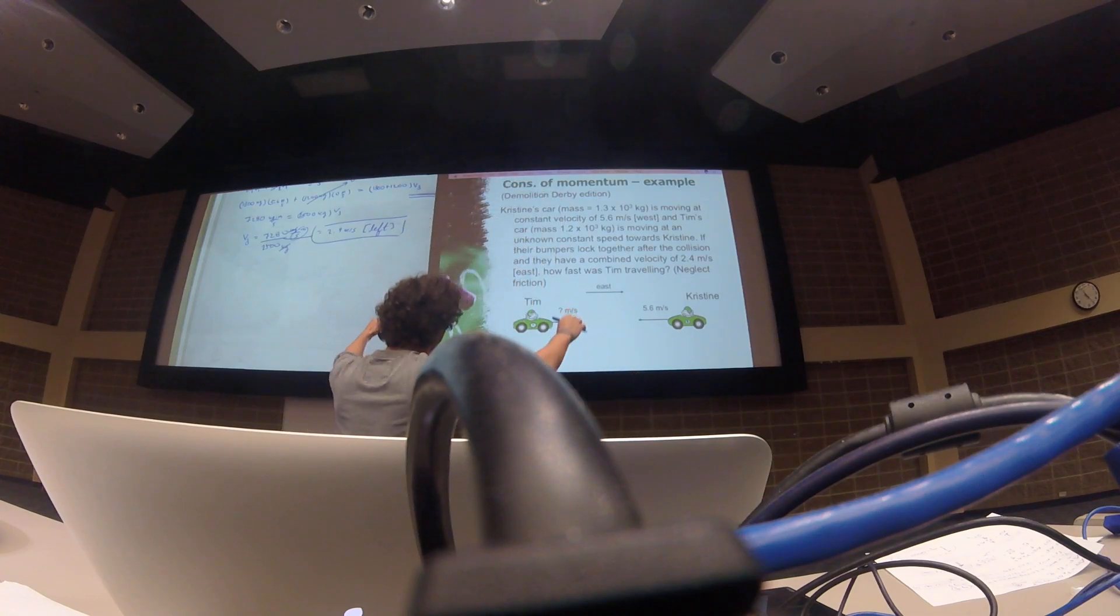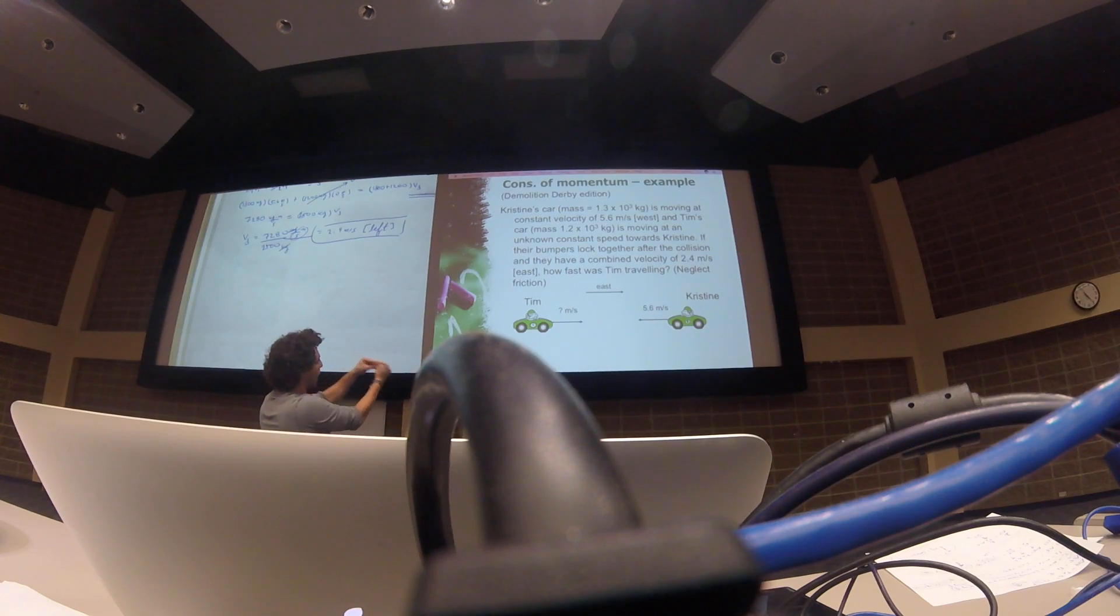Okay, so the picture is playing pretty well. We have Christine moving west, Tim moving at some speed to the east. If they lock together after the collision, and they have a combined velocity of 2.4 meters per second to the east, how fast was Tim traveling before the collision?